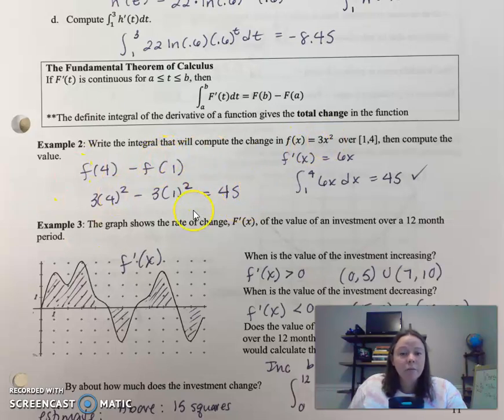No calculus involved. We're just finding the change in the function. Now, to use a definite integral, you're going to do the definite integral from 1 to 4. That's your lower and upper bound.